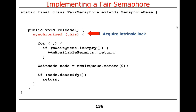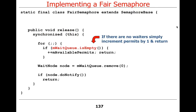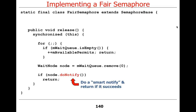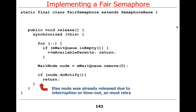Here's release. It grabs the lock and goes into a loop, checks to see if the queue is empty. If empty, we increment the count by one and bail out. If not empty, we get the next item out of the queue and do a smart notify. Do notify checks to see whether something's been interrupted already. If it has, it returns false — causing us to loop back around again, skipping over nodes that have been interrupted. If it does succeed, we return. Otherwise the node was already released due to an interrupt or timeout and we retry.